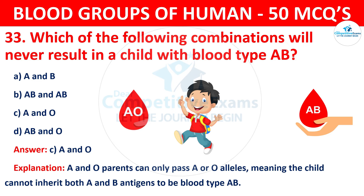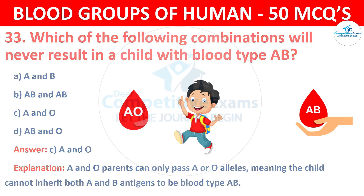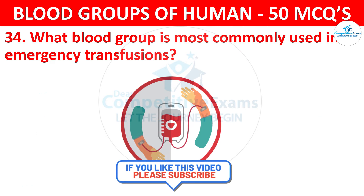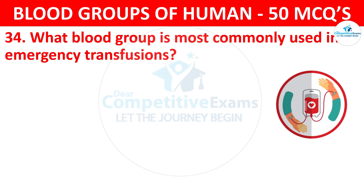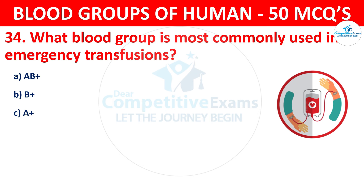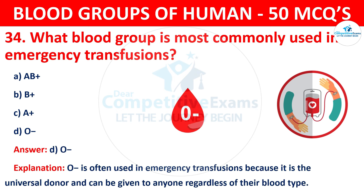Question 34: What blood group is most commonly used in emergency transfusions? The correct answer is D, O negative group. O negative is often used in emergency transfusions because it is the universal donor and can be given to anyone regardless of their blood type.